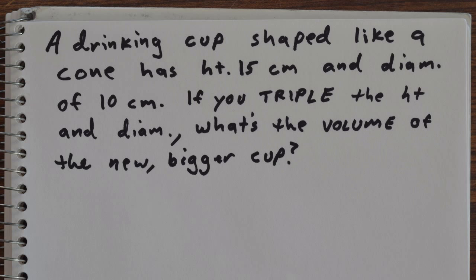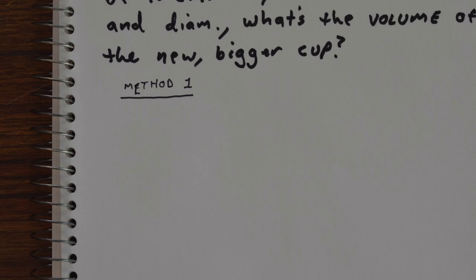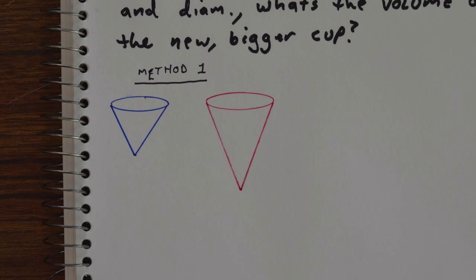So let's apply that to a couple of examples. Let's say we have a cone-shaped drinking cup, and it is currently 15 centimeters tall with a diameter of 10 centimeters. If we triple the height and diameter, what will be the volume of the new bigger cup? We'll walk through two different ways to solve this problem.